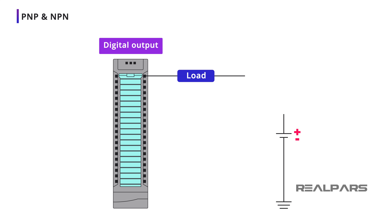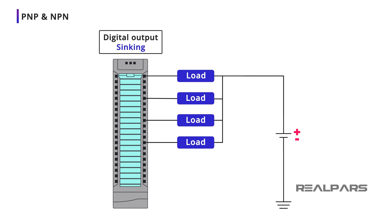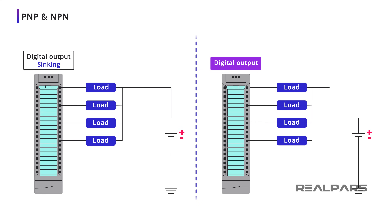You might ask: when looking at a wiring diagram, is there a quick way to identify if a module is sinking or sourcing? Here's something that might help you. Each module output used will connect directly to one terminal of a load. The other terminals of each load will be wired together. If the wired-together load terminals connect to the plus terminal of the power supply, you have a sinking module. If the wired-together load terminals connect to the negative terminal of the power supply, or ground, you have a sourcing module.